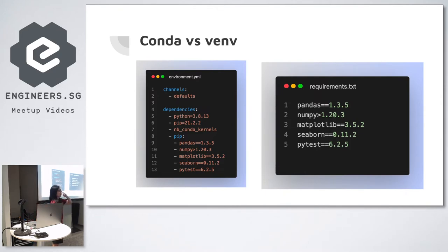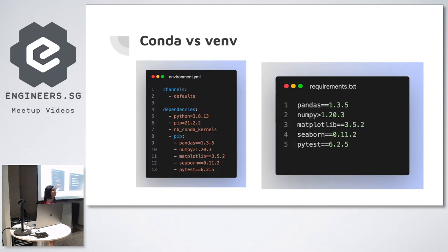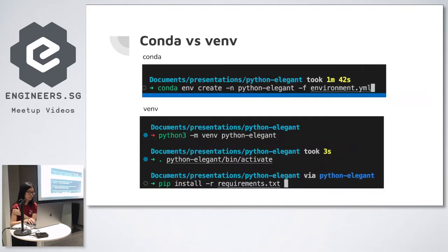In my current company, I have one team that uses requirements.txt and my team uses Conda. We keep all our dependencies with pip inside the Conda environment, because we came from requirements.txt originally. The best thing about Conda, in my opinion, is that I can specify the Python version and the channel — whether it's Conda Forge or the default Conda channel.